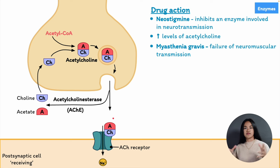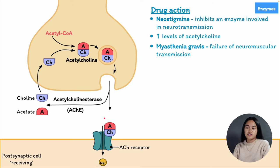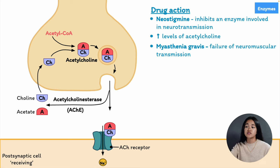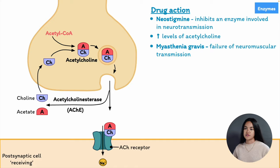Different drugs can inhibit acetylcholinesterase. Neostigmine binds to and inhibits acetylcholinesterase in a competitive or reversible manner. When we inhibit this enzyme, we can't break down acetylcholine, so we end up with increased levels of acetylcholine at the synapse. Neostigmine is used in the treatment of myasthenia gravis, a neuromuscular disease characterized by failure of transmission at the neuromuscular junction — where the main neurotransmitter is acetylcholine. By preventing the breakdown of acetylcholine, we increase its levels at the neuromuscular junction, enhancing neuromuscular transmission. There are also drugs that inhibit this enzyme irreversibly — this family of molecules is known as organophosphates.